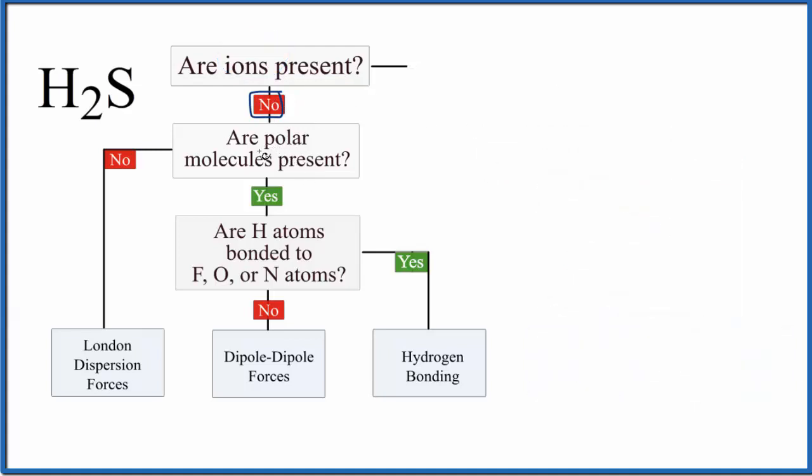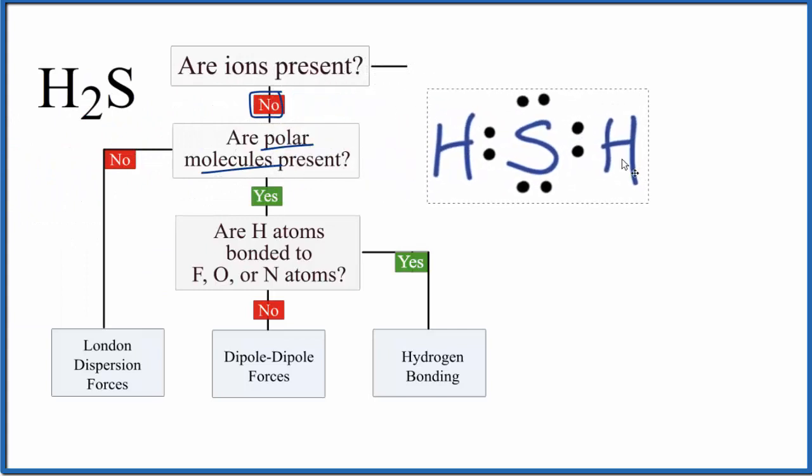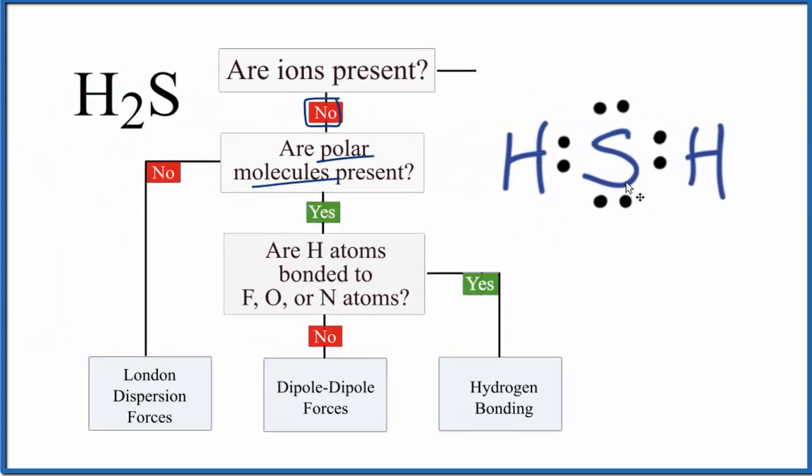Next we need to know if we have polar molecules. So H2S, is this a polar molecule? And to figure that out, we'll first look at the Lewis structure, and then at the molecular geometry. So there's a difference in electronegativity between the sulfur and the hydrogen, and even though the hydrogen atoms are on opposite sides, we really need to think about the molecular geometry, because these two lone pairs up here, they'll actually push those hydrogen atoms down, and we won't have a symmetrical molecule.